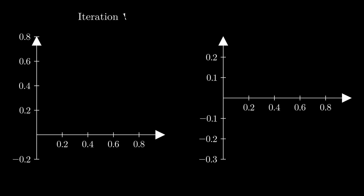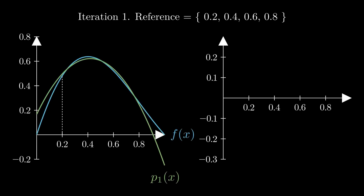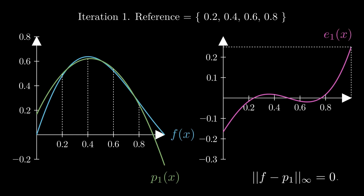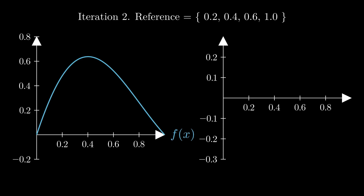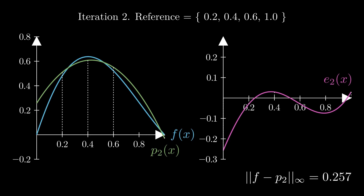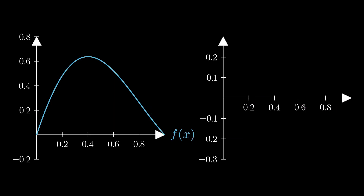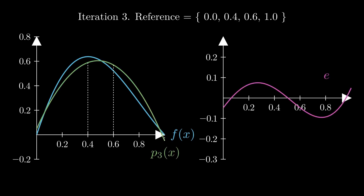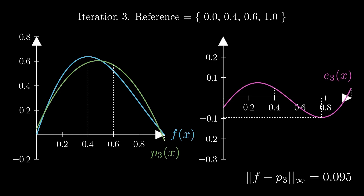This exchange step is what gives the one-point exchange algorithm its name. We start with a reference, use the simultaneous equations to find p(x), calculate the error function, then exchange the x value giving the maximum absolute error with the closest reference point of the same error sign. Each iteration brings the reference closer to the one that gives the best minimax approximation. Going through the iterations: in iteration 1, the maximum error occurs at x = 1 with absolute value 0.25, so we replace 0.8 with 1. In iteration 2, the maximum error occurs at x = 0, and we exchange it with 0.2. By iteration 3, a significant improvement is visible — the maximum error occurs at 0.768 and is negative, so we exchange 0.6.